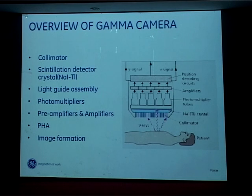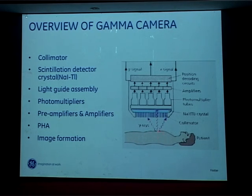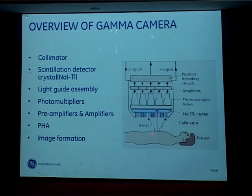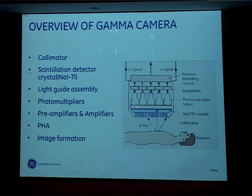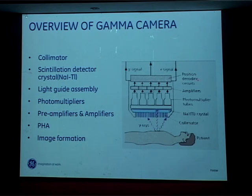The components of a gamma camera: a patient is injected with a gamma-emitting radioisotope with a short half-life and energy anywhere between 140 to 200 keV, so the radiation burden for the patient is less. The emitted gamma rays are picked up by the gamma camera to form the image. The components are: a collimator, a scintillation detector crystal of sodium iodide doped with thallium, a light guide assembly, photomultiplier tubes, preamplifier and amplifier, pulse height analyzer, and finally image formation.